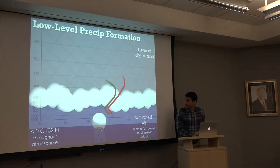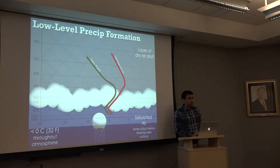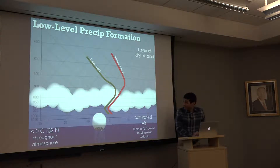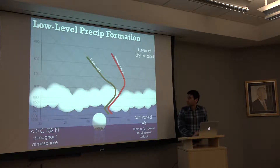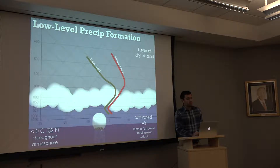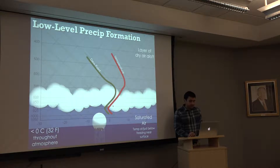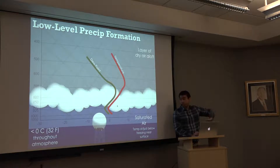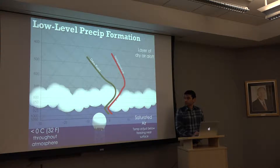We'll overlay a skew-T and imagine what the thermal and moisture profiles look like. We can see saturation at low levels, and then once we get above into a subsiding layer on top of that saturation, it dries out as the dew point drops off. Perhaps we're close to or north of a warm front seeing this low-level saturation, or a cold front has moved through and we're seeing upglide over our location as it pushes farther south.